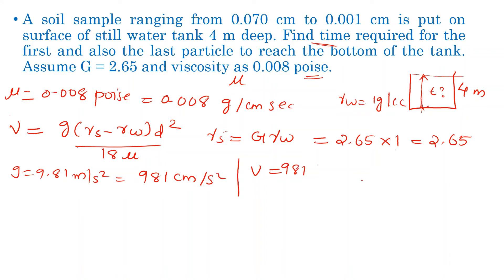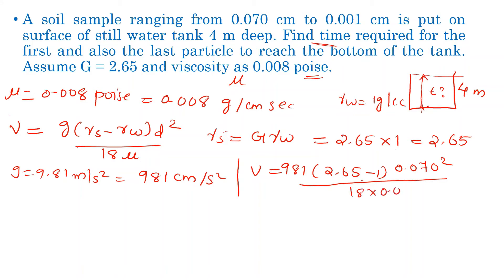Substituting values: V = 981 × (2.65 − 1) × (0.070)² / (18 × 0.008). Here 0.070 is in centimeters, directly substituted.